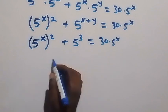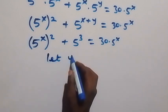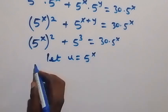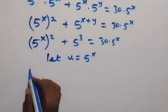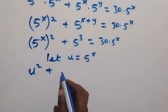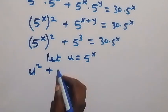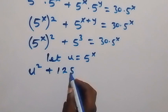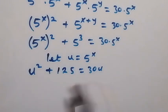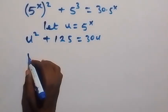Let u be equal to 5 raised to power x. Then we can write this equation as u squared plus 5 cubed — which is the same as 125 — plus 125 equals 30u.